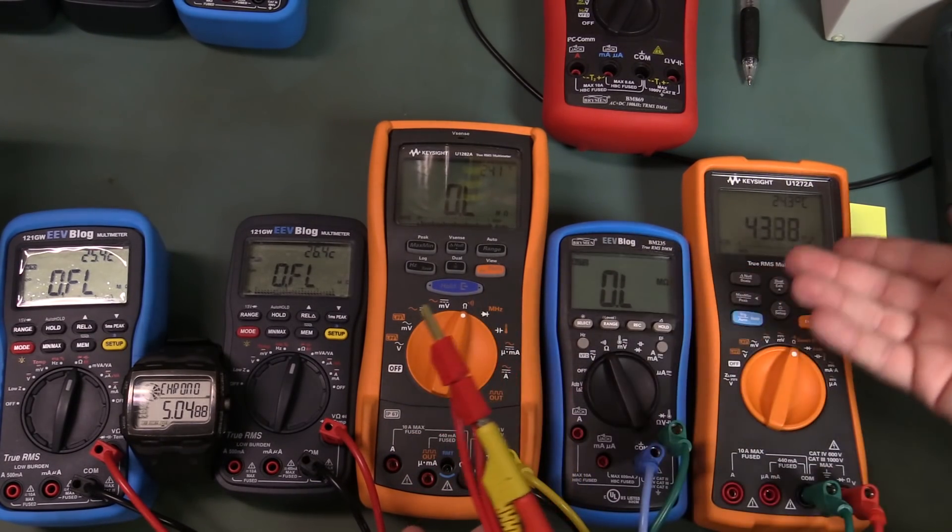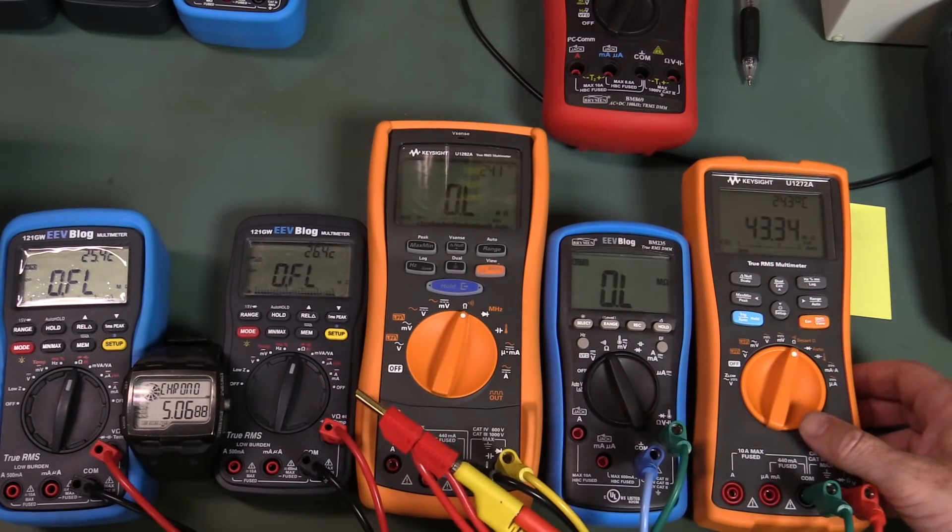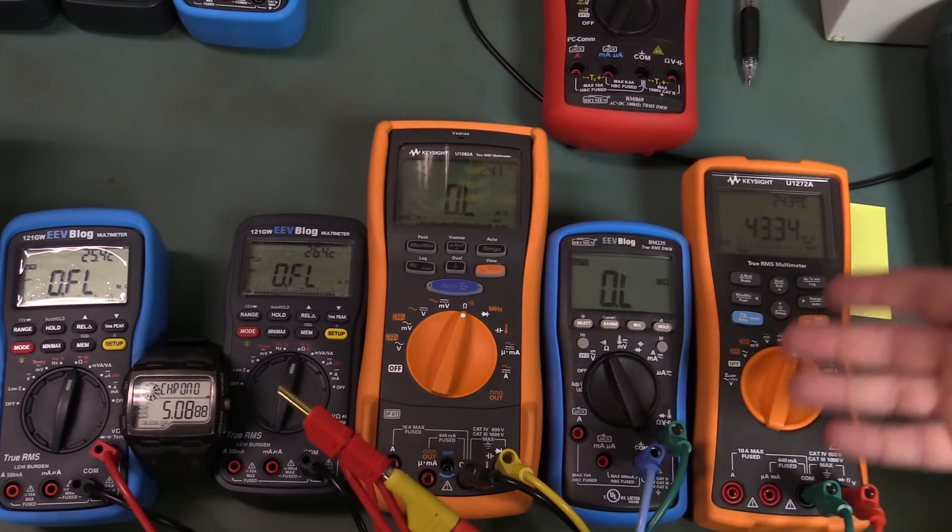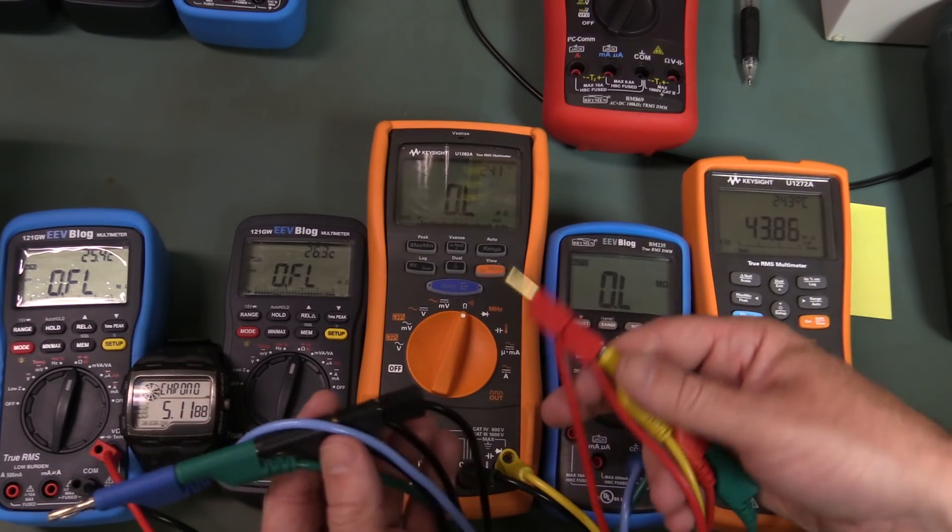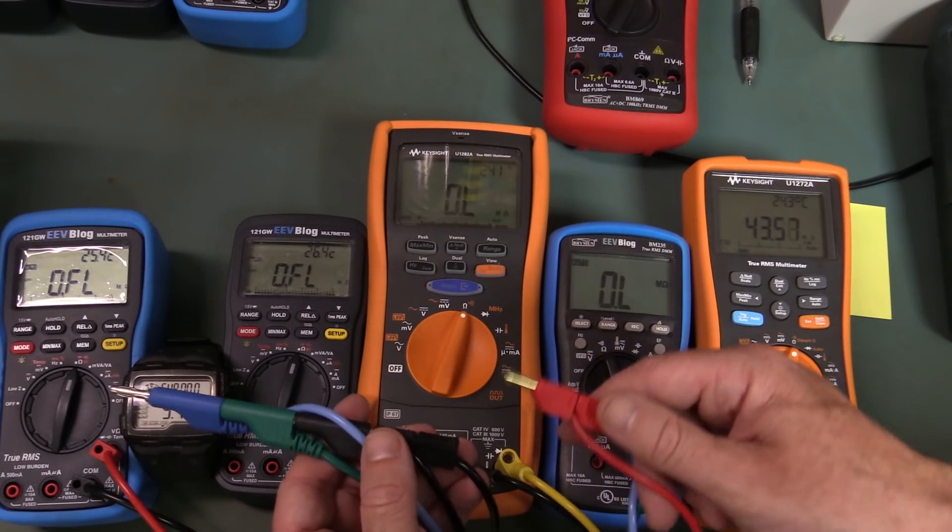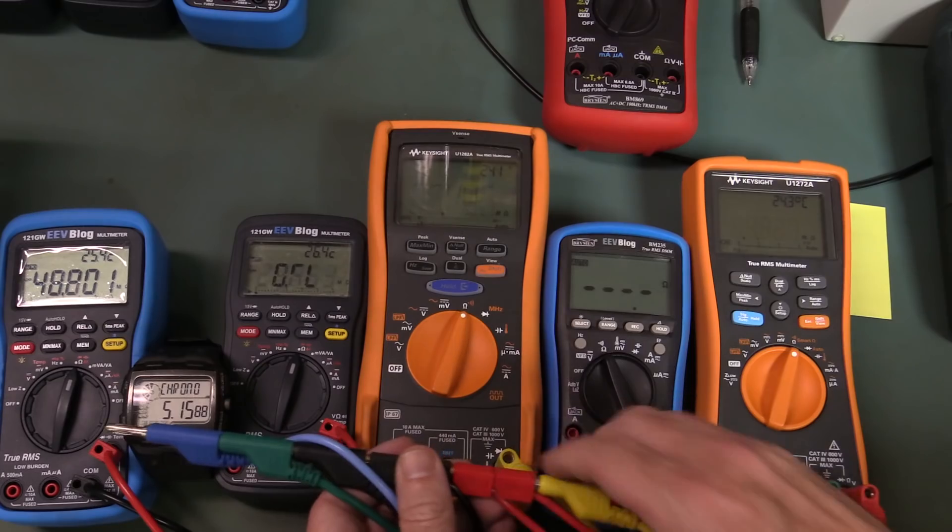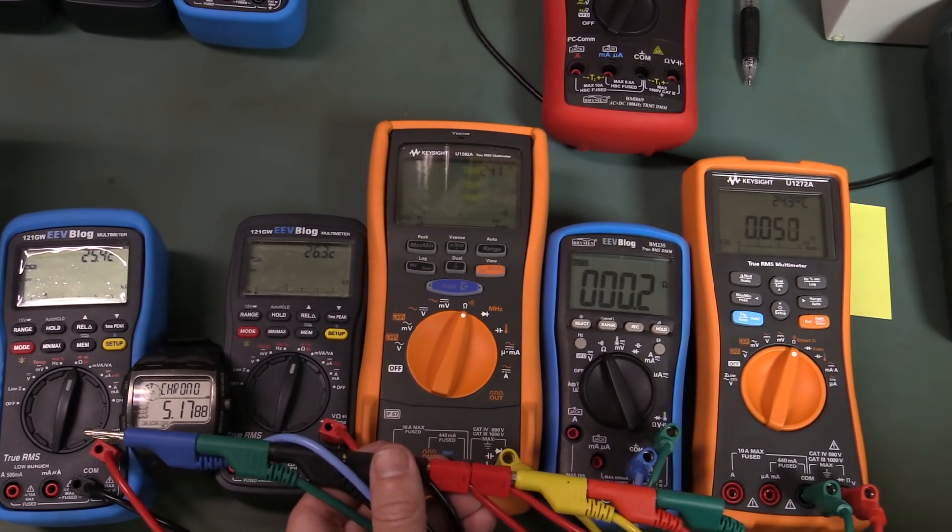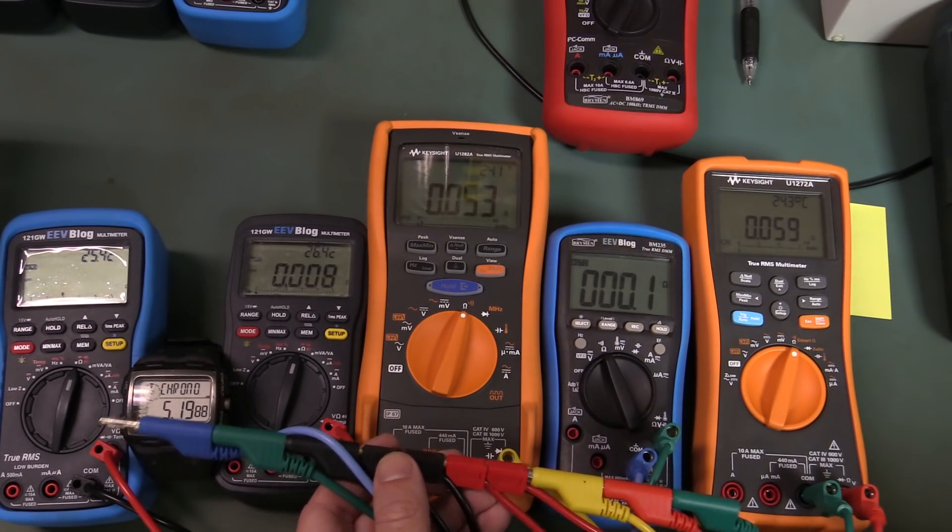And you'll notice that the Keysight is just showing a residual reading here because as I said, there's various drive currents trying to actually drive these things. So it's not an ideal test, but there we go, look at that. That's practically near enough to instant there.